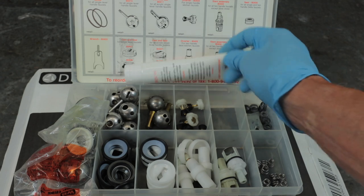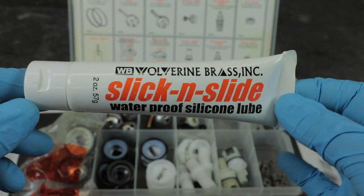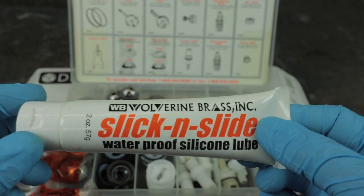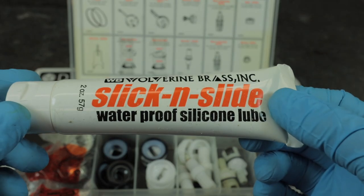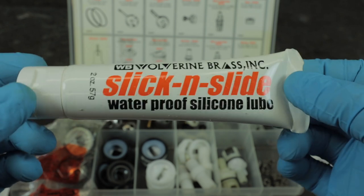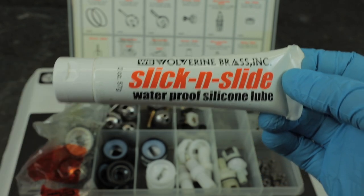But basically, these are the parts I use. The other thing you're going to want to have on hand is some waterproof silicone lube. This is Wolverine's brand. I buy a lot of stuff from Wolverine. But this is readily available. This you can use after market. But yeah, the slick and light works really great. And without further ado, let's get into this repair.